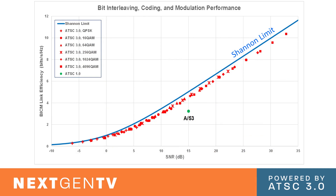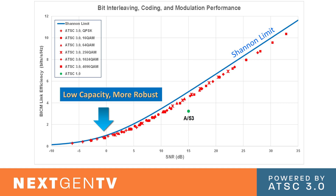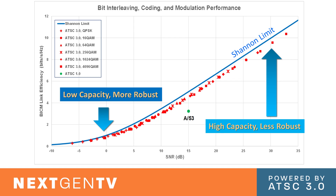It's really about broadcasters, but it's one of the most important reasons why they want this. The little dot that says A53 is where we are today. The Shannon limit shows how many bits I can carry compared to how robust the signal is. At one end of the chart, I have an extremely robust signal but not very many bits. At the other end, I have a not very robust signal — you might need a big rooftop antenna — but you can get a lot of bits in there. The Shannon limit shows the theoretical best-case trade-off.